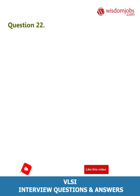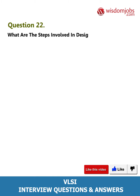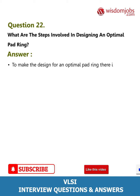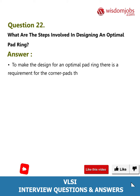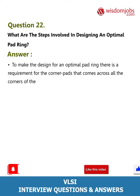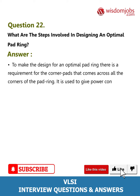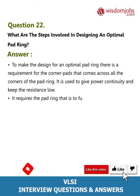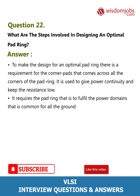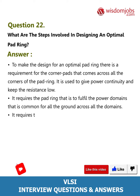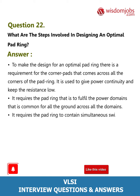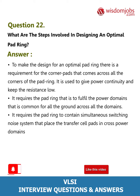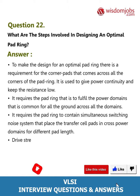Question 22: What are the steps involved in designing an optimal pad ring? To design an optimal pad ring, there is a requirement for corner pads that come across all corners of the pad ring. This is used to give power continuity and keep the resistance low. It requires the pad ring to fulfill the power domains that are common for all grounds across all domains. The pad ring must contain a simultaneous switching noise system that places transfer cell pads in cross power domains.